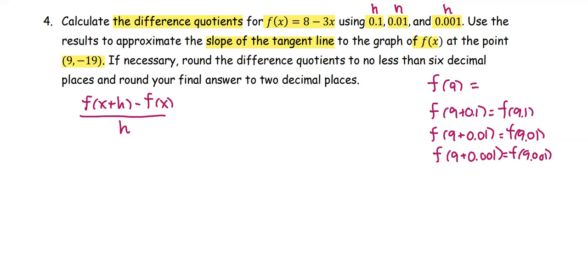Using the formula or function given as 8 - 3x, f(9) comes out to be -19, which is the same as the value at the coordinate given. Then, using the calculator with the same function to compute f(9.1), we get -19.3.